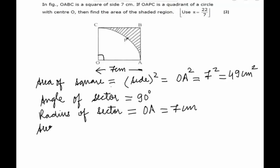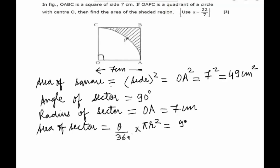Thus, we can find out the area of the sector, which is given by the formula theta upon 360 degrees into pi r squared. Since theta is 90 degrees: 90 upon 360 into 22 by 7 into 7 squared, which is the radius squared. Thus, we get the area of the sector equal to 38.5 cm².